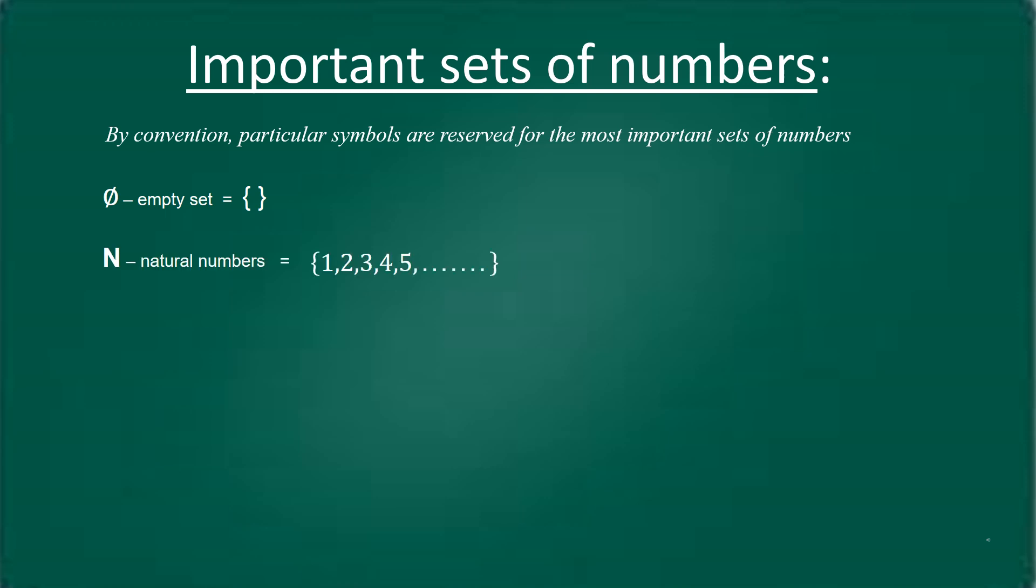The set of natural numbers is denoted by capital N. The set contains 1, 2, 3, 4, 5 and so on. The set of natural numbers contains the consecutively positive integers.